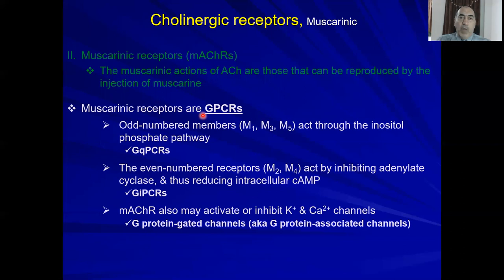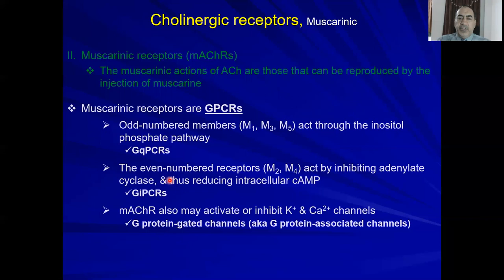There are five subtypes — M1 through M5. The odd-numbered subtypes — M1, M3, and M5 — are Gq-PCRs. They activate phospholipase C, which splits PIP2 into diacylglycerol (DAG) and inositol trisphosphate (IP3). The even-numbered receptors M2 and M4 are Gi-PCRs; they inhibit adenylate cyclase and thus reduce the amount of cyclic AMP.